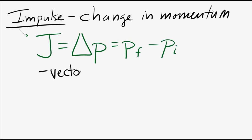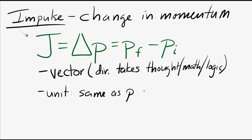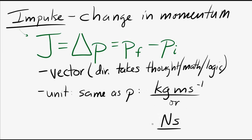Impulse is a vector — we can find its direction using a bit of math, and we'll see examples of that shortly. The unit of impulse is the same as the unit of momentum: either kilogram meters per second or Newton seconds.